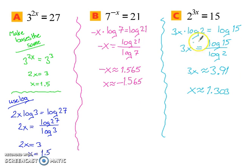Follow the same exact pattern. So bring down your exponent, then divide by logs on both sides, then divide by 3 on both sides, and you end up with x is about equal to 1.303.